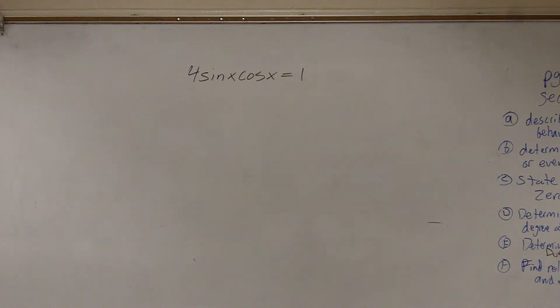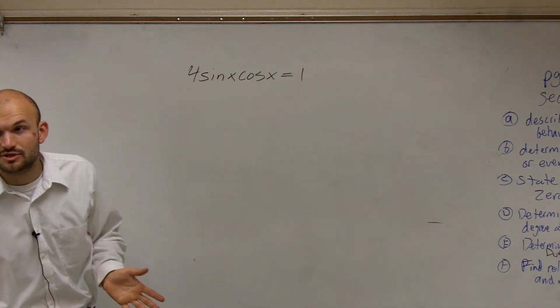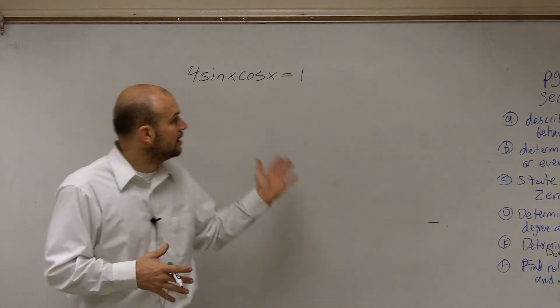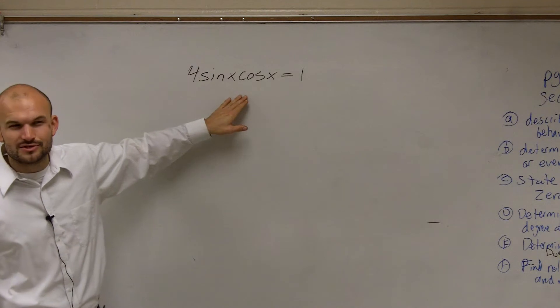So now we're going to work on trying to solve. I have 4 sine of x times cosine of x equals 1. Now we want to again try to do the exact same thing. However, for this problem, I don't have any double angles, do I?